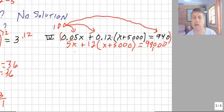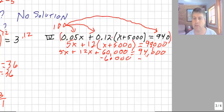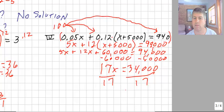So 5x plus distribute the 12: 12x, 12 times 5,000 is 60,000, equals 94,000. Subtract 60,000 from both sides. 5x and 12x, that's 17x equals 94 minus 60, gives us 34,000. Divide by 17, and x equals 2,000. So some nice sample problems for solving linear equations.